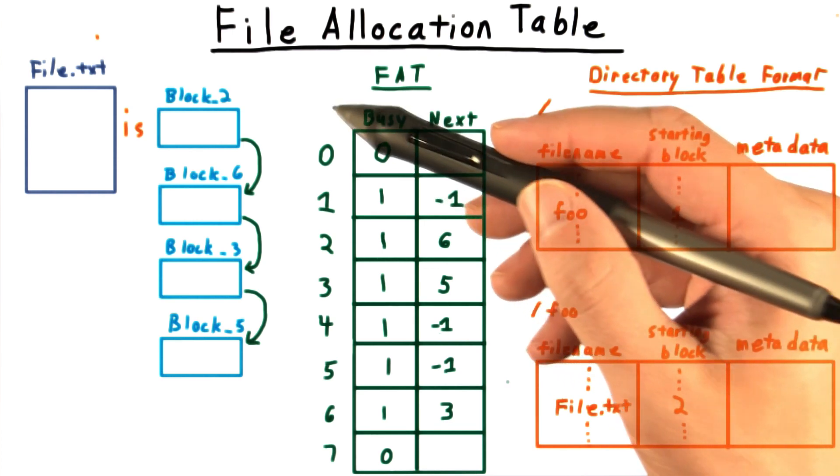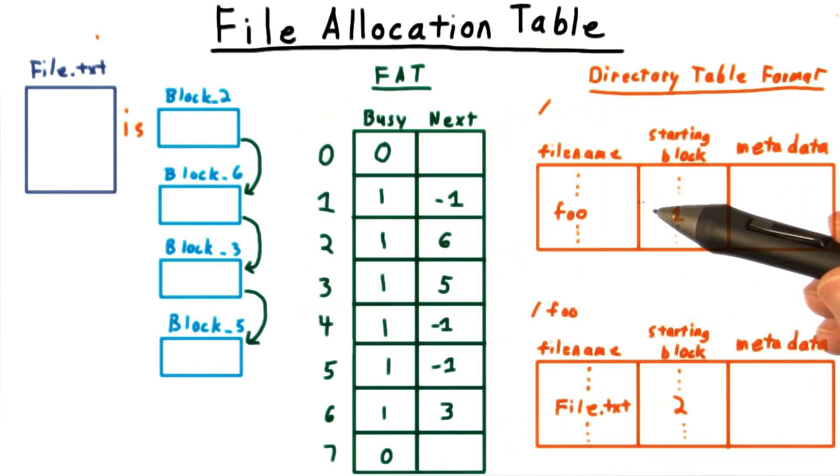As for access, it will behave much like a linked list. It will be great for sequential access, as we quickly find and follow the links, but poor for random access, since we have to walk through half the links to get to the middle of the file, and all of the links to get to the end.